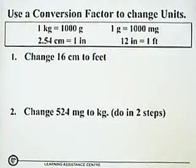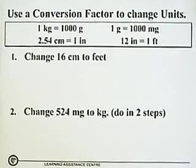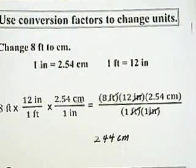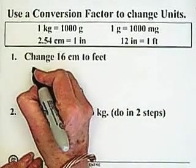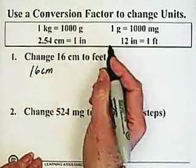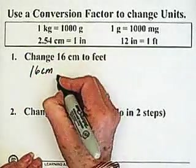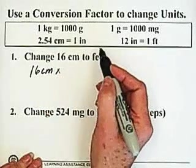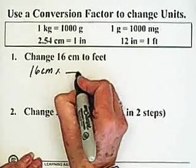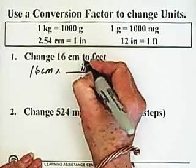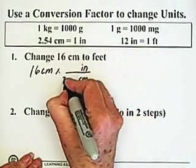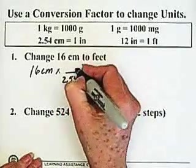Now let's try some examples. Here we have 16 centimeters and we want to change that to feet — very similar to what we just did, but now we're going from centimeters to feet, pretty much just backwards. So 16 centimeters, and I'm going to do this all in one step. Using a relationship of inches per centimeter, I want centimeters in the denominator because I want my centimeters to cancel, and I want inches in the numerator. I know there are 2.54 centimeters for one inch.